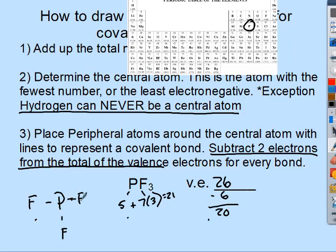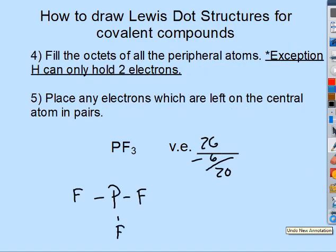Step four says to fill the octets of all the peripheral atoms — exception: hydrogen can only hold two. Step five is to place any leftover electrons on the central atom. Each fluorine currently has two electrons from the bond, so each needs six more. The central atom phosphorus has two, four, six — so it still needs two more.